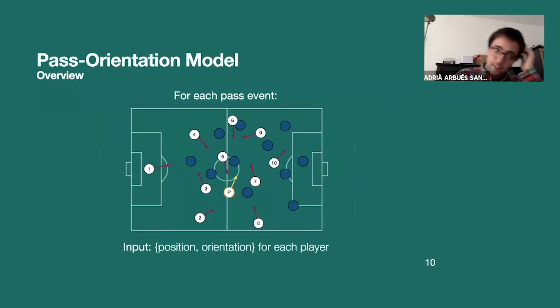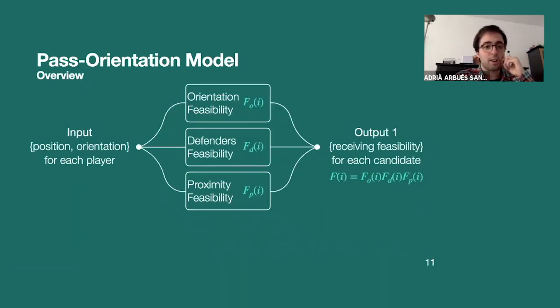So the thing we want to build now, the pass orientation model, we start with this big picture. So for each pass event, we not only have the position of offensive players, we have the position of defensive players, and we have as well their orientation. So what we're going to do is break it down into pieces and compute three different independent feasibility measures. One is based on orientation, the second one on defenders, and the third one on proximity, and then we'll combine them all together.